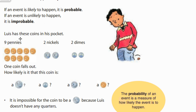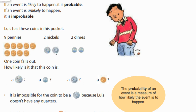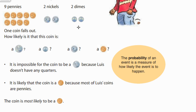Let's take a look at this example. Louis has these coins in his pocket — he has nine pennies, two nickels, and two dimes. One coin falls out. How likely is it going to be a nickel? Well, there are thirteen coins total, and the majority of them are pennies, so it's not super likely to be a nickel.